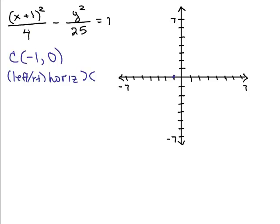So let's see. I could think of the denominator here under the X squared part as 2 squared. So I know from that center I go 2 to the right and 2 to the left and those are my vertices of my hyperbola right there. I didn't ask for the vertices but you can see what ordered pairs those are. It's 1, 0 and negative 3, 0.